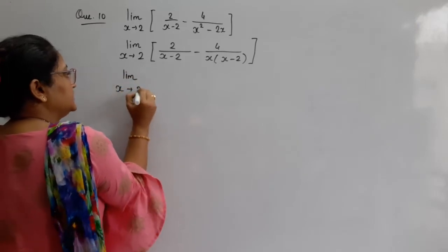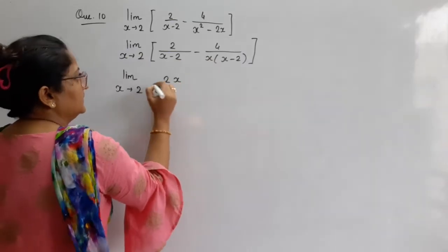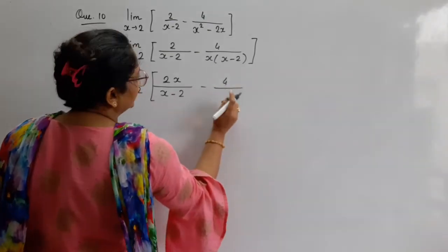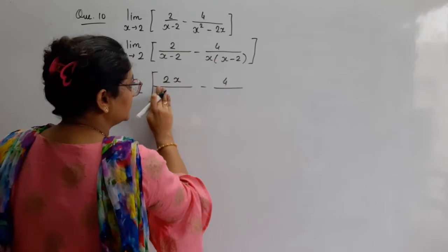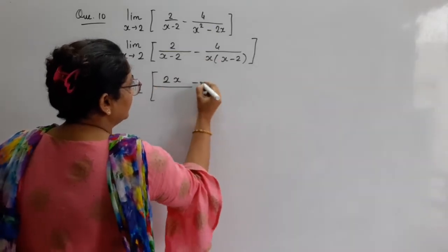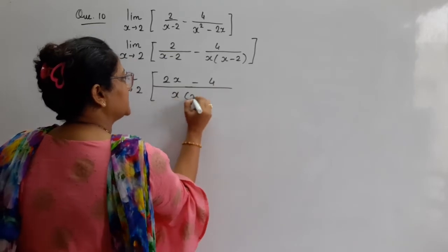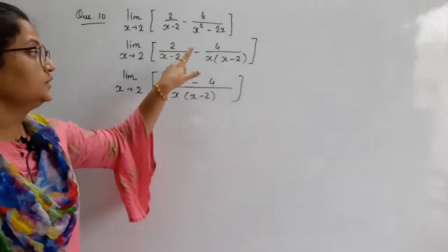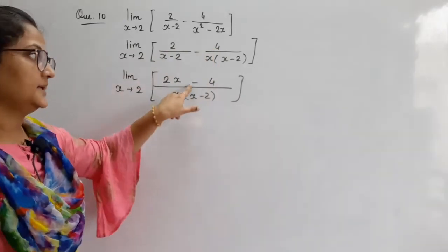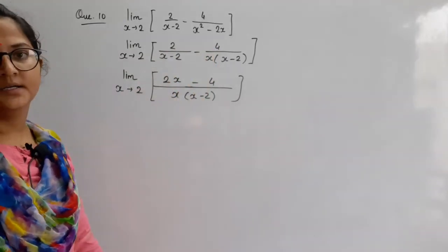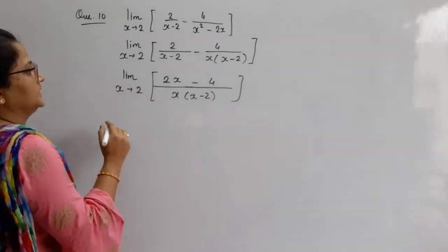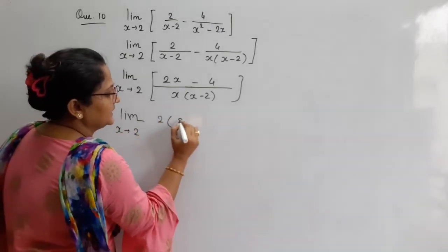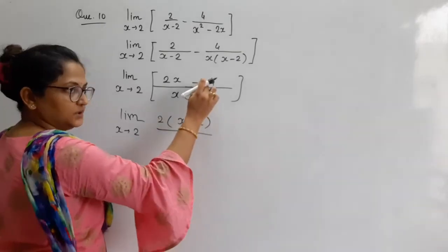Limit x tends to 2. 2. Yeh x idhar a gaya. Vaise bhi x ka to kaam hi hai idhar se udhar. 4. And see, yeh x idhar chala gaya. So ab dono ka common hi likh lenge hum log. Minus 4. Aur common dono ke niche a jayega. x minus 2. Dono ke common ab ho gaya. x. Udhar niche x nahi tha. To yeh x idhar multiply ho gaya. x. Or yeh minus 4. Minus 4. Or dono ke common ab ho gaya. x. x minus 2. Upar se aap log common nikaalo. 2. To bacha kya. x minus 2. x minus 2. 2 common nikaalo. To 2 bacha na. Or kya bacha? x. x. x minus 2.